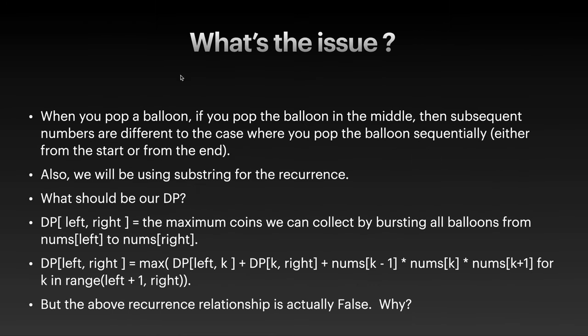The issue is: when you pop a balloon in the middle, the subsequent sub-arrays are different from the case where you pop the balloon sequentially — say you pop position one, then two, then three. That's what makes the problem difficult. As for the recurrence relationship for this DP, we will be using substrings.